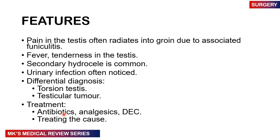Clinical features of orchitis include pain in the testes, which often radiates to the groin and is associated with funiculitis. There may be fever and tenderness in the testes, and a secondary hydrocele. Urinary infection is often noticed. Differential diagnosis includes torsion of the testes and testicular tumor. Remember: the Prehn's test — elevation of the testes — relieves pain in epididymitis and worsens pain in testicular torsion. Treatment is through antibiotics, analgesia, and treating the underlying cause.